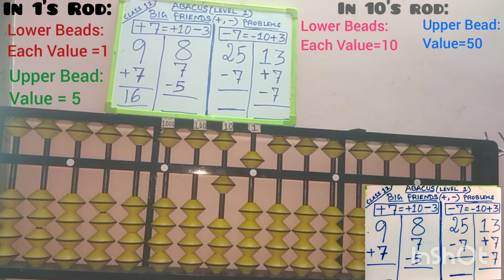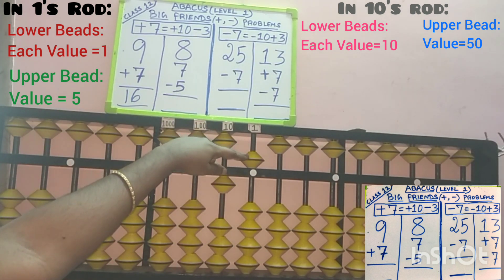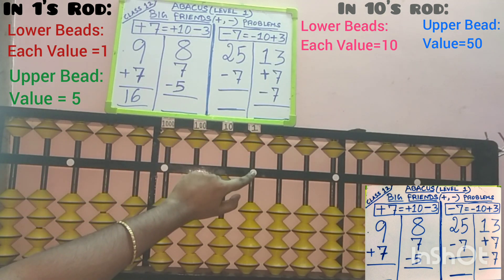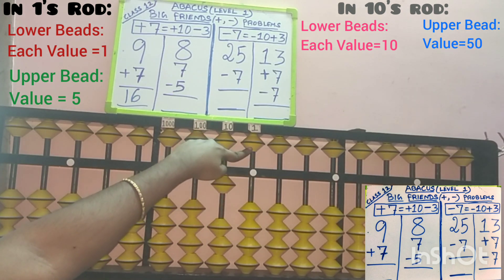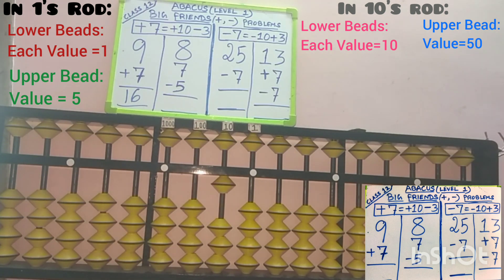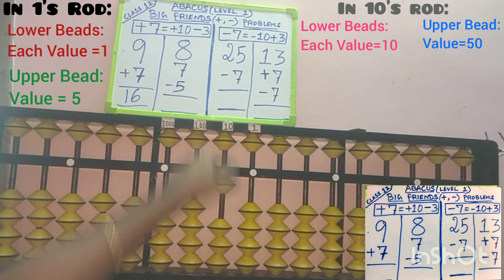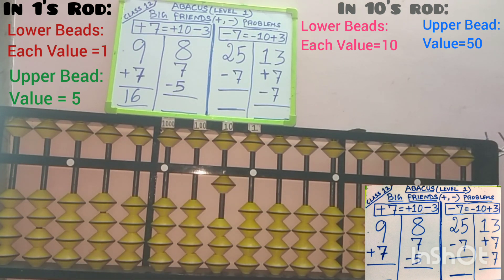Next, third row: minus 5. We need to remove 5 beads in the 1s slot, as 5 is in the 1s place. 5 beads are already added, so we can do minus 5. 5 beads removed from the answer point, so minus 5 is completed. Now check the answer: in the 10s slot, only 1 bead touches the answer point, and in the 1s slot, no beads are added — so we consider it as 0. 10 is the answer for this second sum.